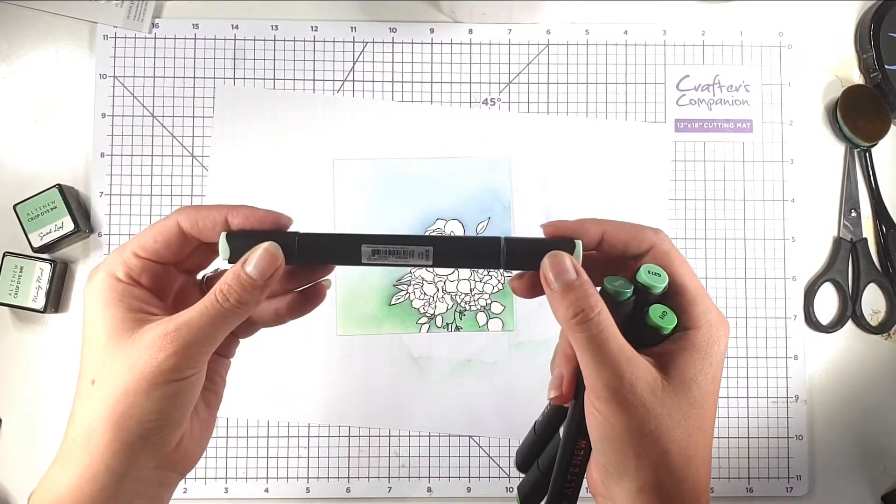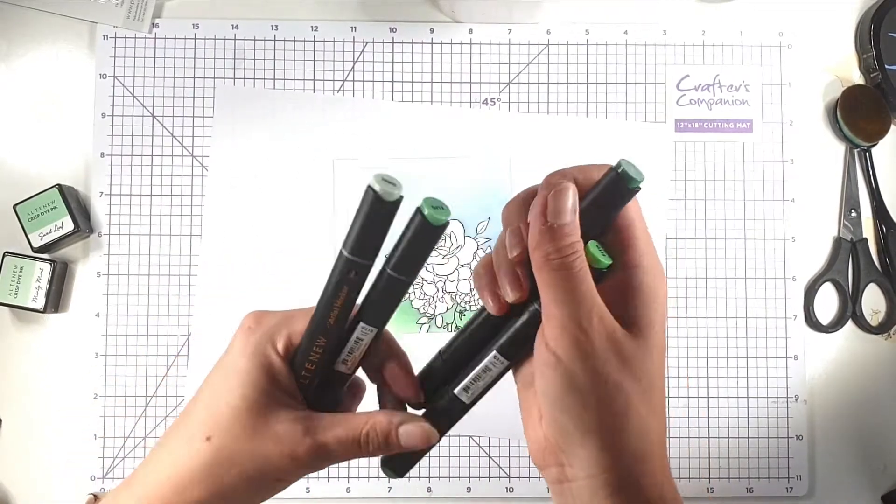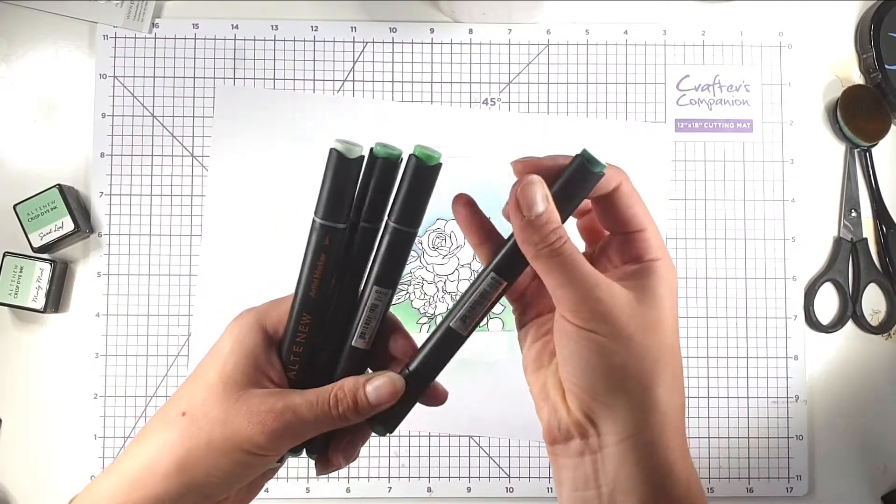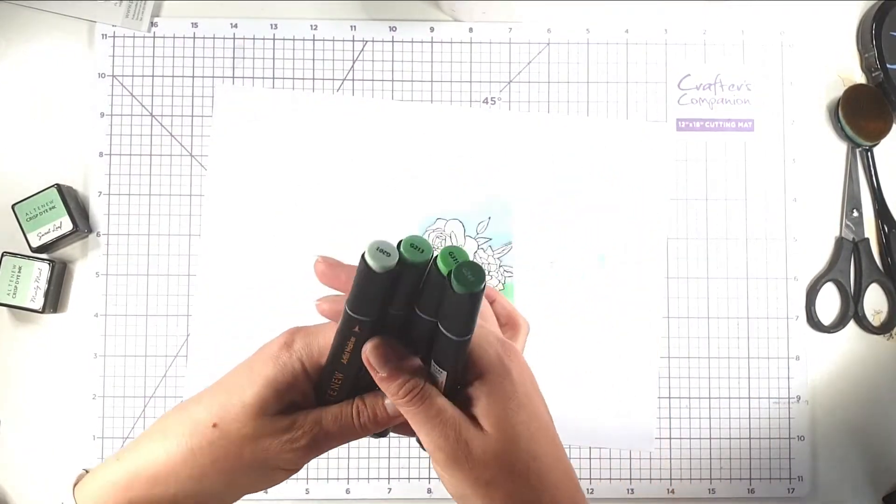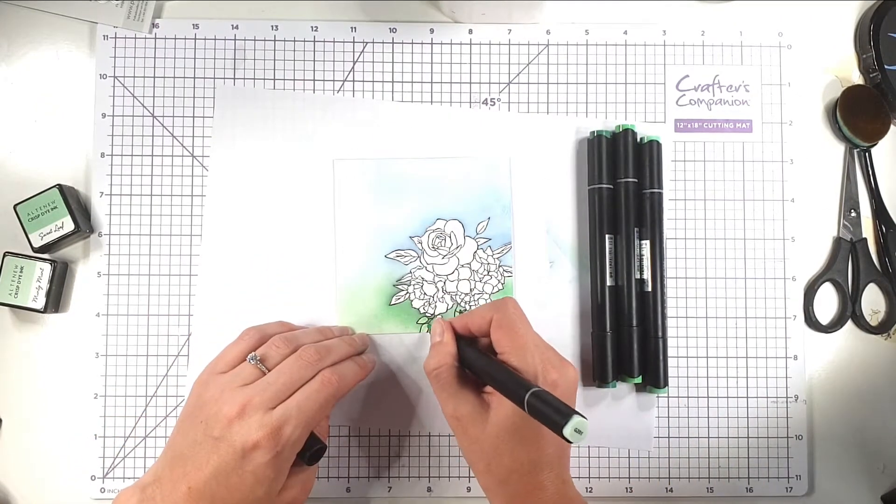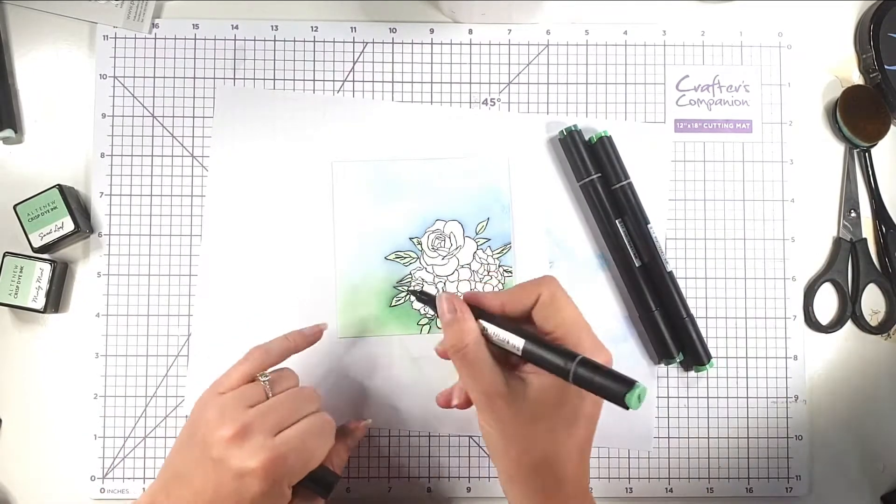So I've got minty mint is the lightest colour and I've got sweet leaf, so those are actually the two colours I use down here, just green and honey to green. So I'm going to go from lightest to darkest, then sweet leaf.